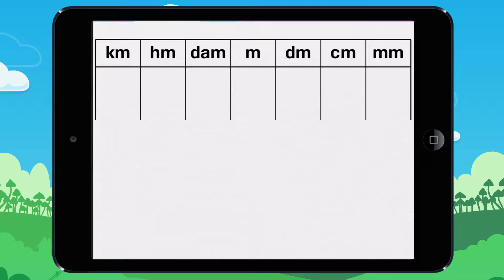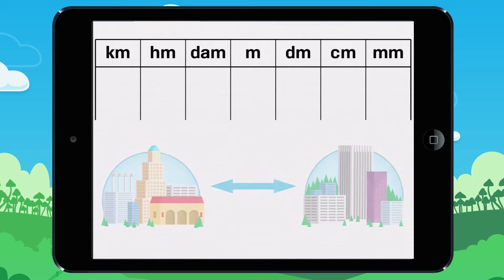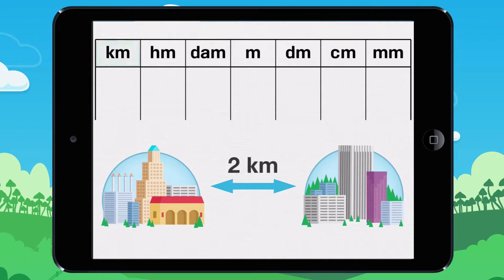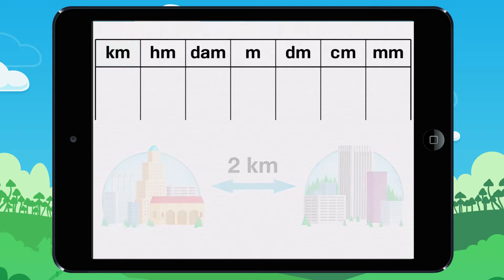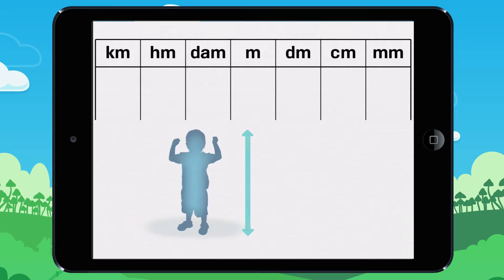These units are used to describe distances or lengths. For example, to describe the distance between two towns, we use kilometers. To talk about the height of a person, we use meters.